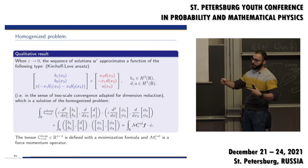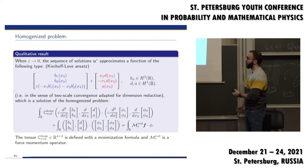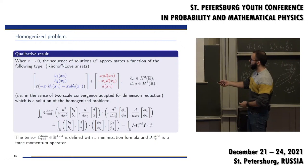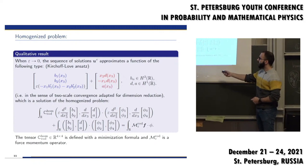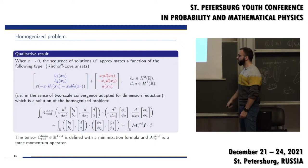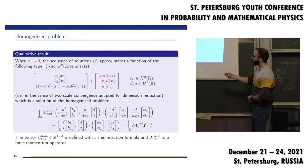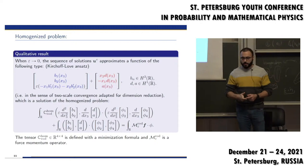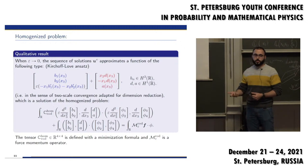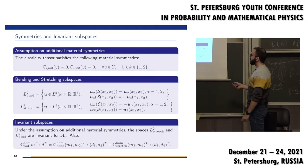This limit function satisfies a limit problem. The homogenized tensor is defined again via a minimization procedure. For the bending part, you get a fourth-order equation — standard in dimension reduction theory, where the order of the equation increases in the limit. There is also a momentum operator appearing: you don't need the full information on the forces to know how your rod bends; you only need certain moments of the force.